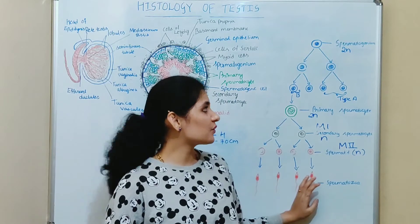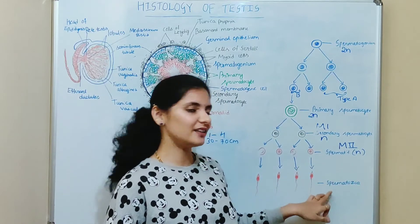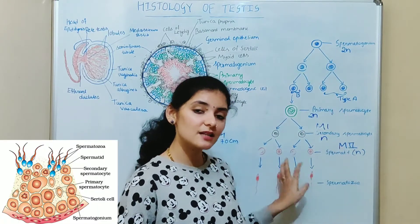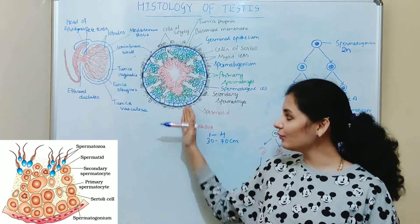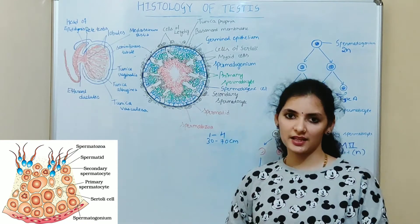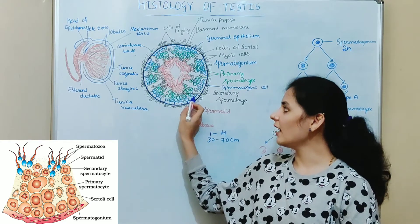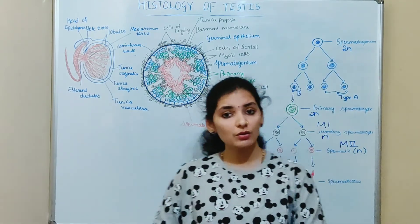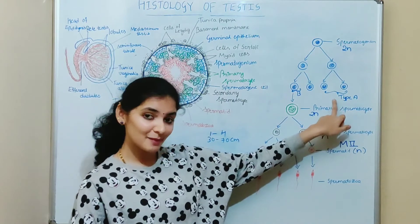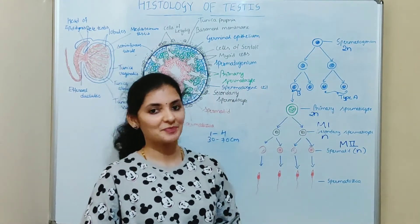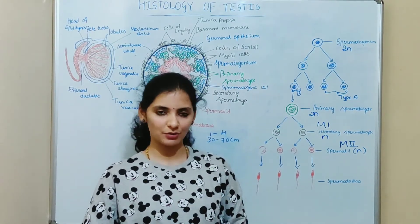Spermatogenesis includes different kinds of cells: spermatogonium, primary spermatocyte, secondary spermatocyte, spermatid, and spermatozoa. All these cells are present between the basement membrane and the lumen of the seminiferous tubule, forming about 4 to 8 layers of cells. The outermost layer, just below the germinal epithelium, consists of spermatogonia — the stem cells. There are mainly two types: type A spermatogonia and type B spermatogonia. Type A spermatogonia undergo mitotic division and produce more spermatogonia.